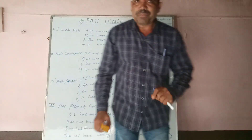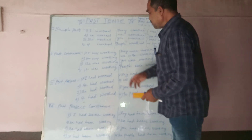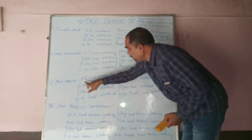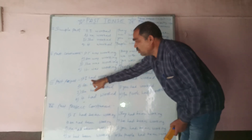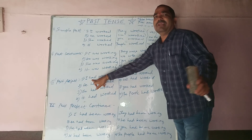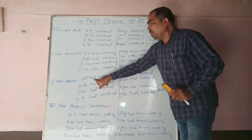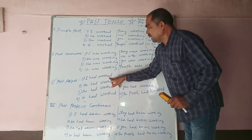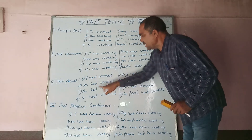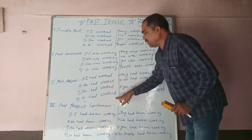In the same way, in past perfect, there is no change at all. I had worked, he had worked, she had worked, it had worked — these are the examples of past perfect with singular pronouns.